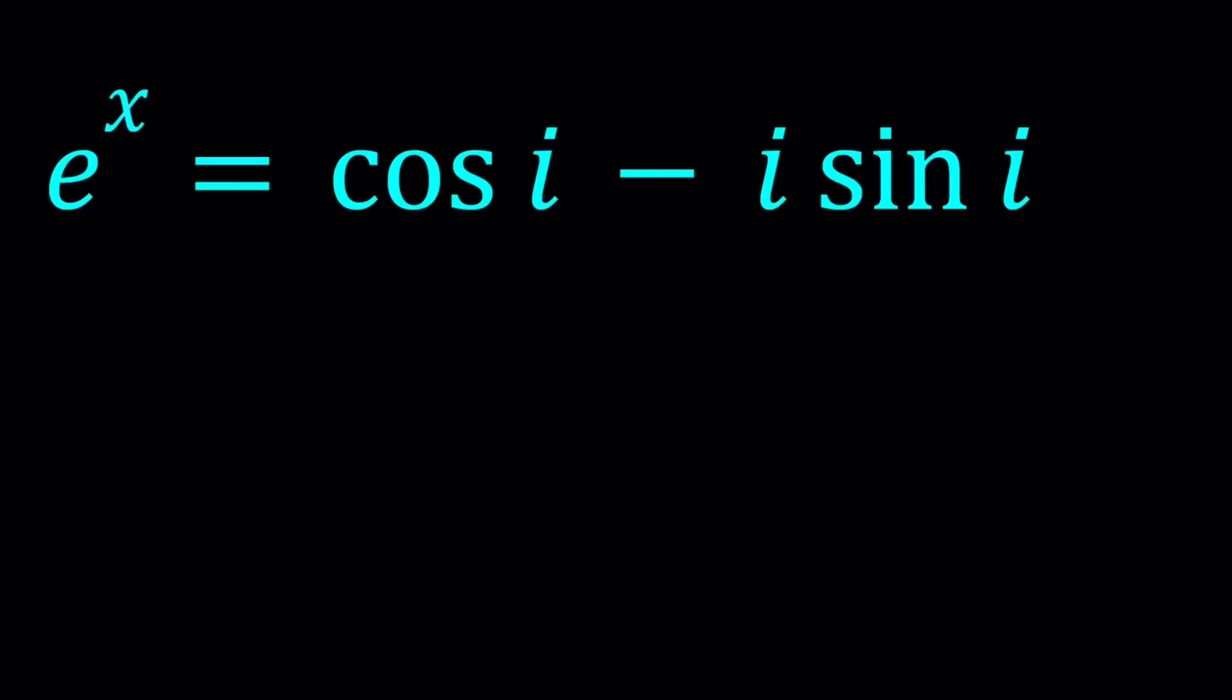Anyways, this is a nice problem in my opinion, please let me know what you think. We have e to the power of x equals cosine i minus i sine i.